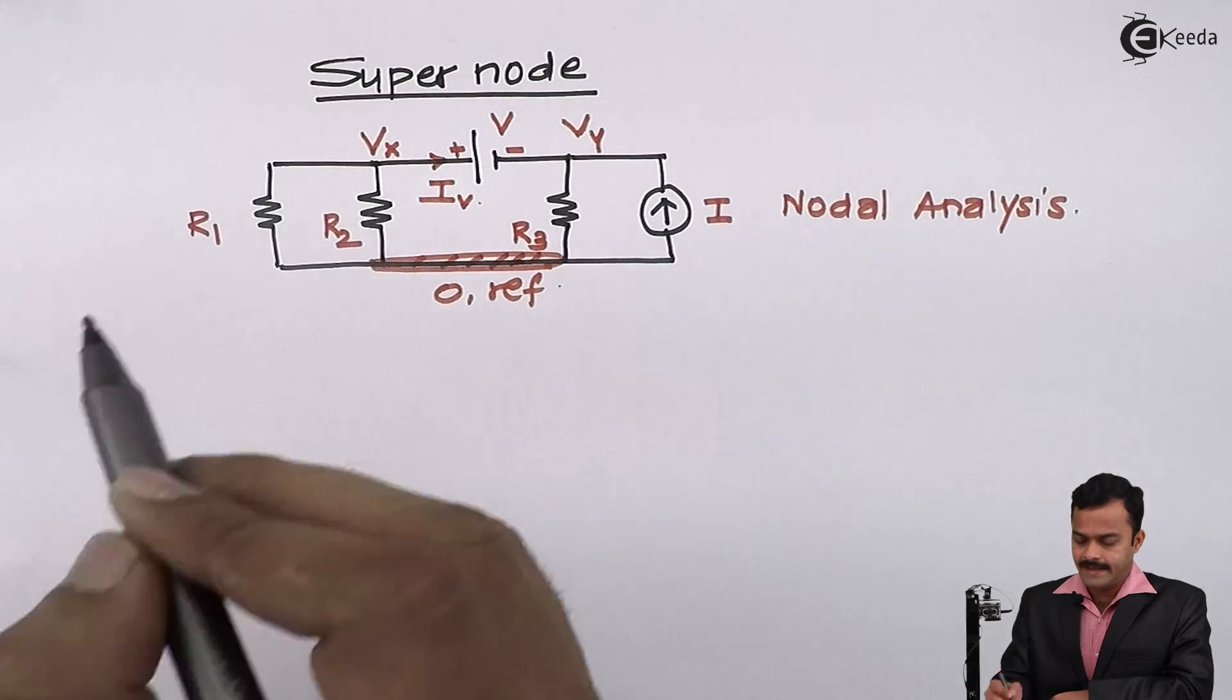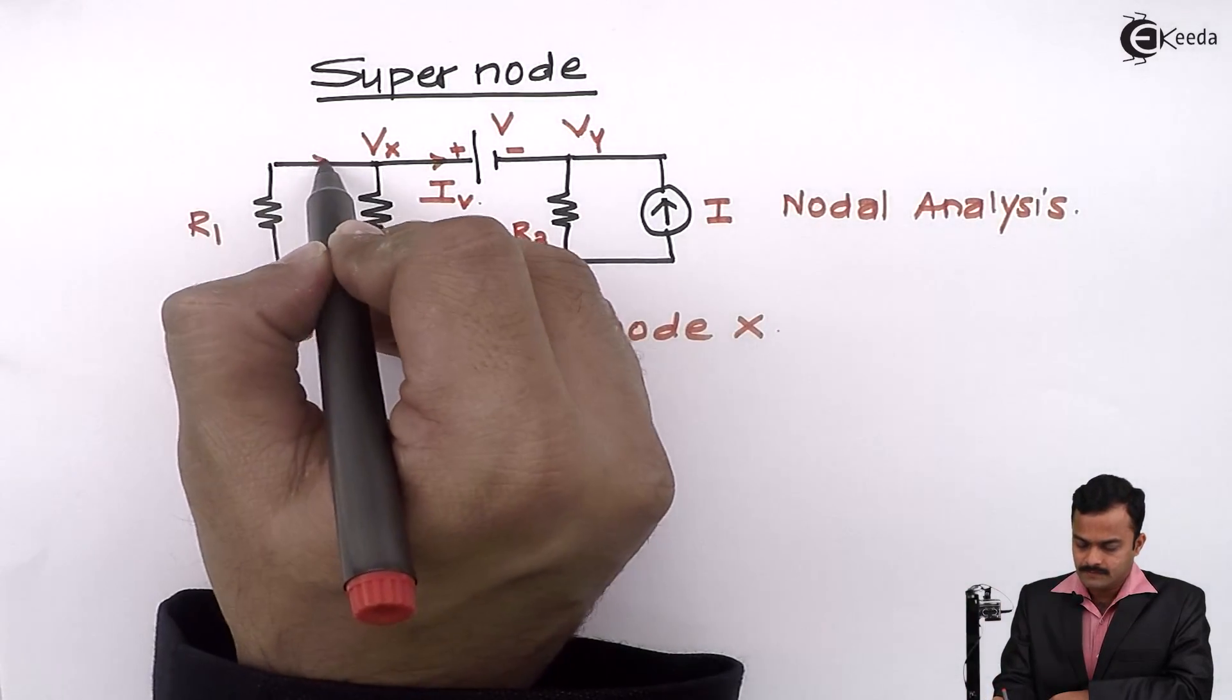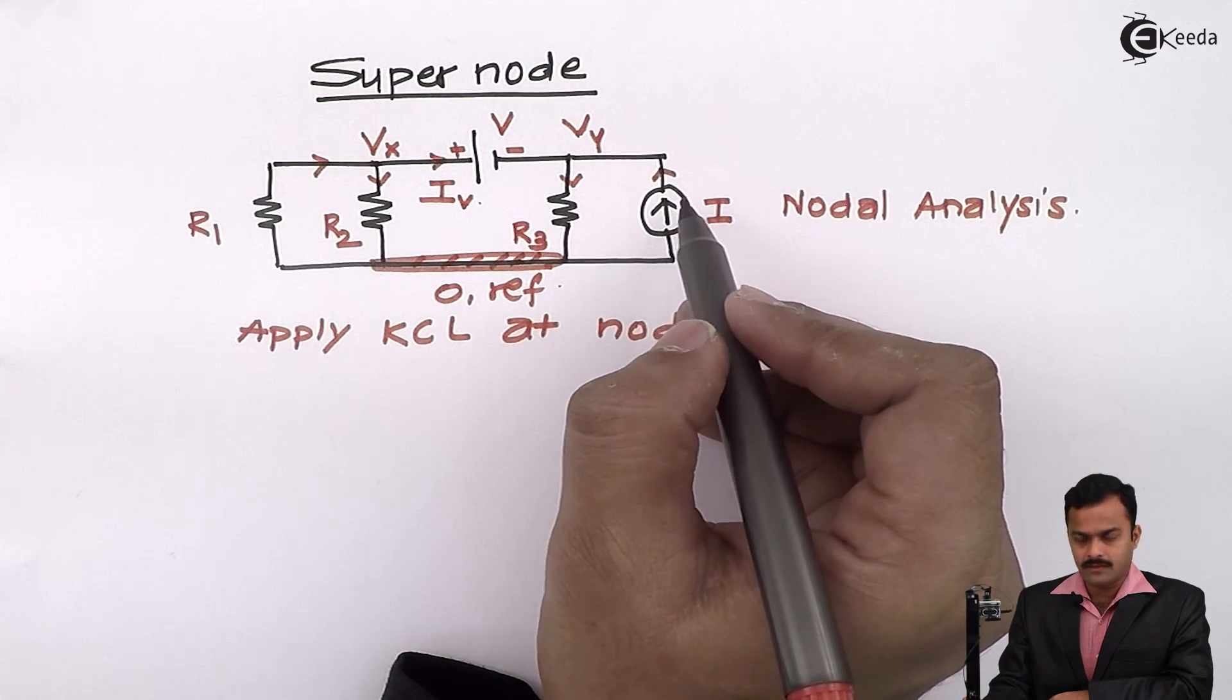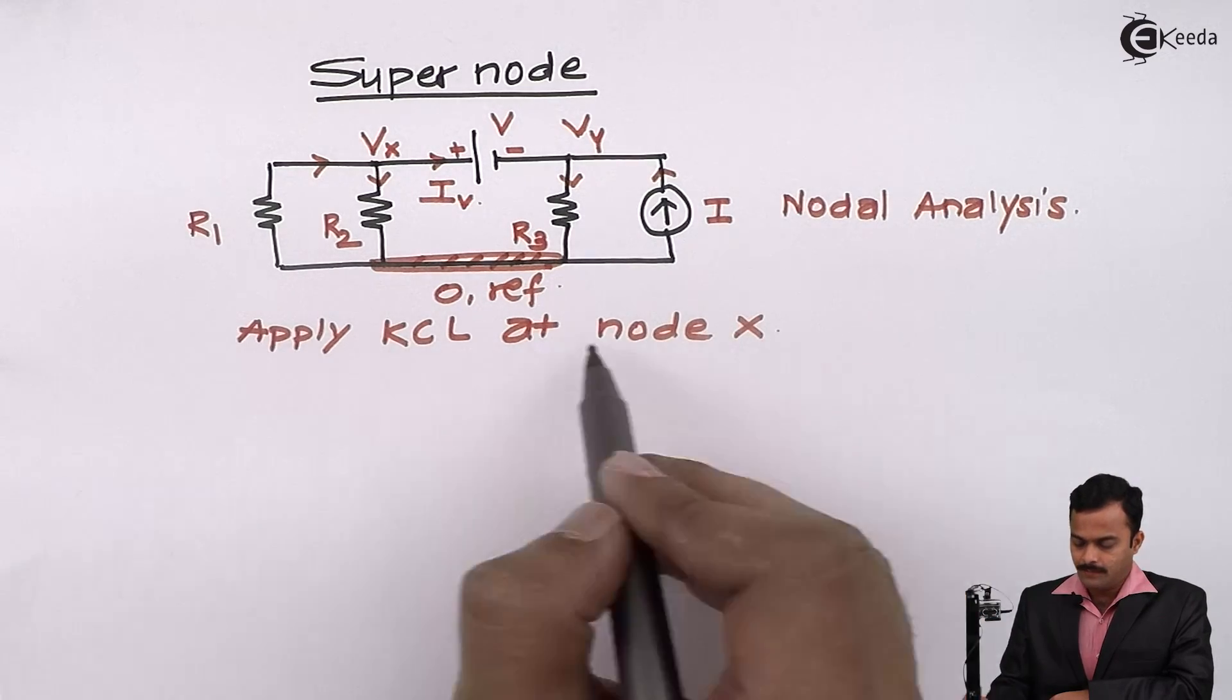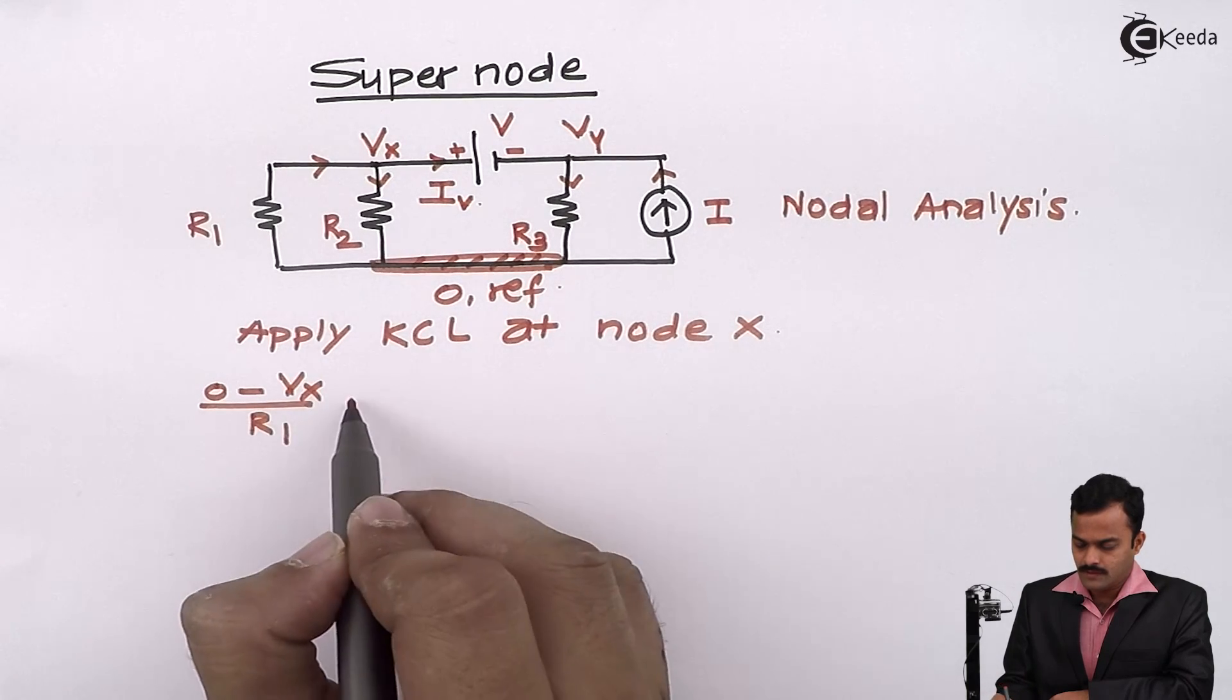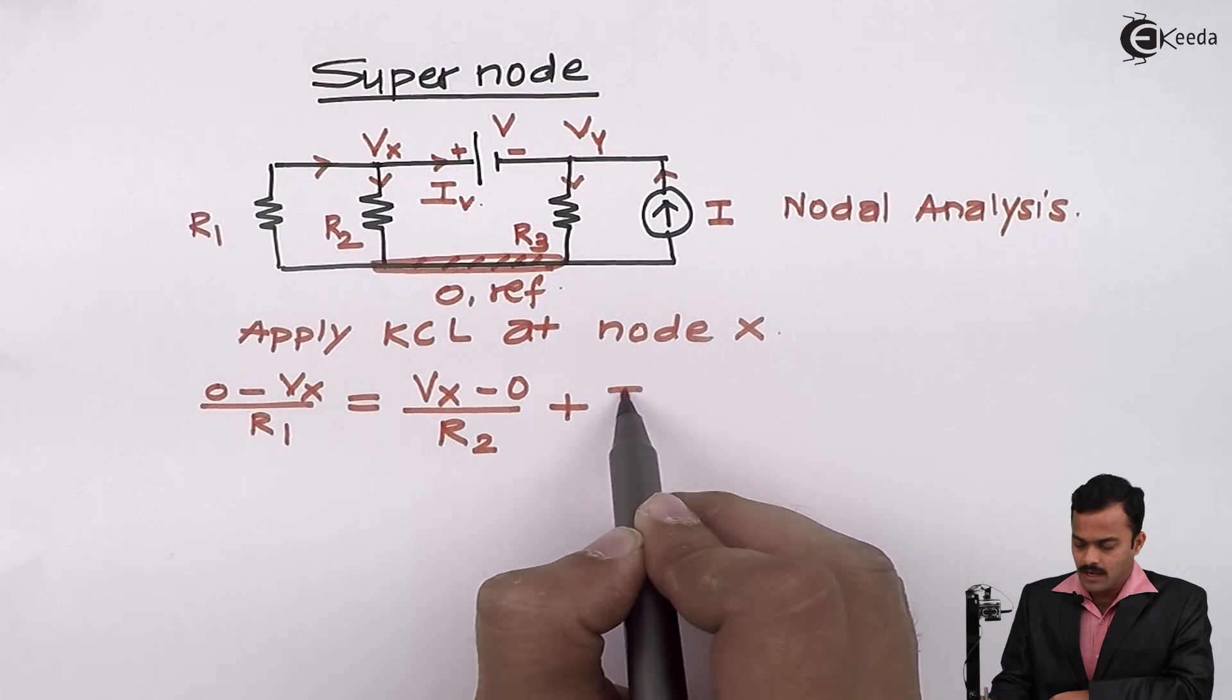Let's apply KCL at node x. So I am considering random current directions only except for the current source which I will give current direction same as whatever current value and its direction it is having. Applying KCL at node x gives me 0 minus Vx divided by R1 equal to Vx minus 0 divided by R2 plus IV.